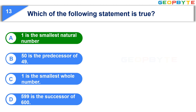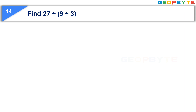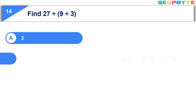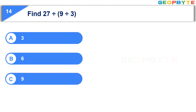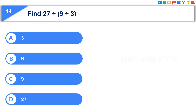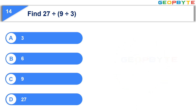The fourteenth question is: Find 27 ÷ (9 ÷ 3). Option A: 3. Option B: 6. Option C: 9. Option D: 27. Your time starts now. Your time is up and the correct answer is Option C, 9.